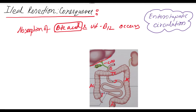By enterohepatic circulation, the bile acid and bile salt secreted from the liver into the duodenum then pass through the small intestine, are absorbed from the terminal ileum, and through the portal venous system go again to the liver, where it is again secreted through the common bile duct. This is the enterohepatic circulation. In another video, I discuss the enterohepatic circulation and its clinical importance — the link will be given in the description box.